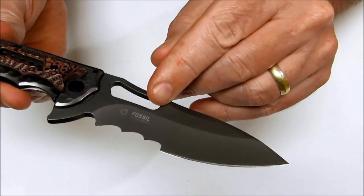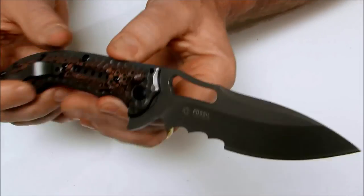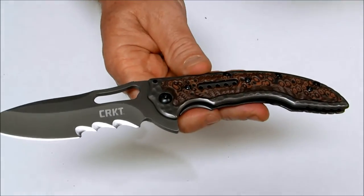On this side it says Fossil, Icoma design, part number 5471K. The opposite side says CRKT.